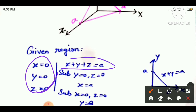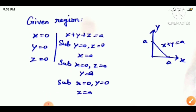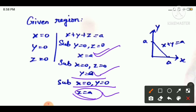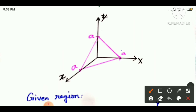Now, x plus y plus z equals a. To find the intercepts, substitute y equals 0 and z equals 0 — then x equals a. Substitute x equals 0 and z equals 0 — then y equals a. Substitute x equals 0 and y equals 0 — then z equals a. So the three intercept points are (a,0,0), (0,a,0), and (0,0,a). We join these three points to draw the plane.